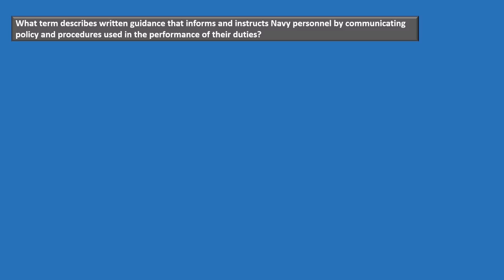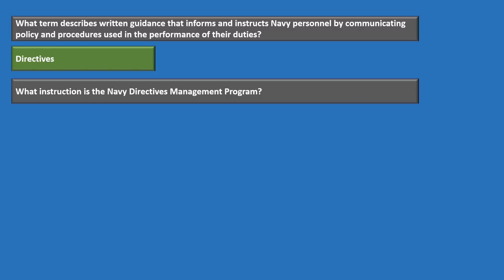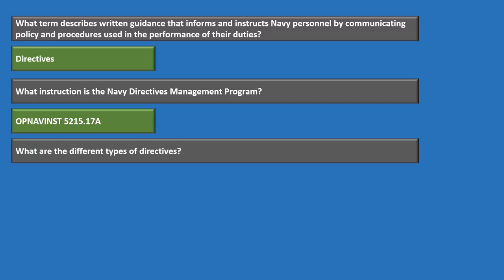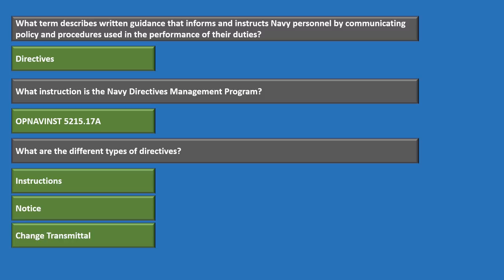Written guidance that informs and instructs Navy personnel by communicating policy and procedures used in the performance of their duties is called a directive. The instruction governing the Navy's directives management program is OPNAV Instruction 5215.17A. The different types of directives are instructions, notices, and change transmittals.